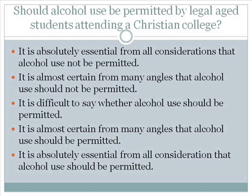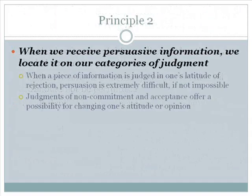Likewise, many Christians would find the latter statements to be within the latitude of acceptance. When we read or hear a statement about student alcohol use, we will first determine which of our latitudes — whether it be acceptable, rejection, or non-committal — it belongs in. Social judgment theory suggests that individuals make these judgments as they receive the information. Thus, how people judge is an important first step in the persuasion process. When a piece of information is judged to fall within an individual's latitude of rejection, persuasion is extremely difficult, if not impossible. Judgments of non-commitment and acceptance offer a possibility for changing one's attitude or opinion.